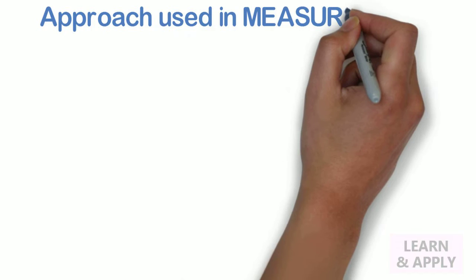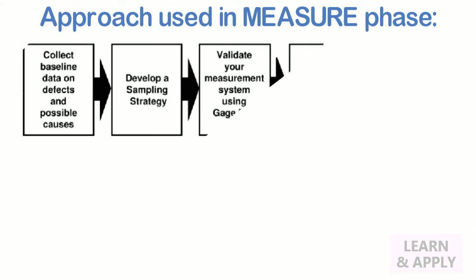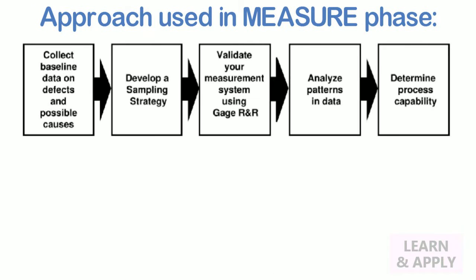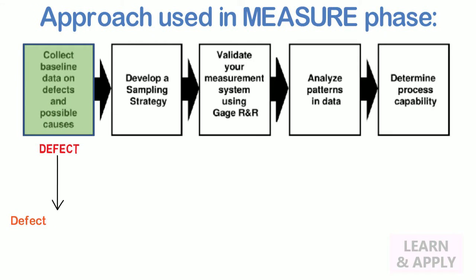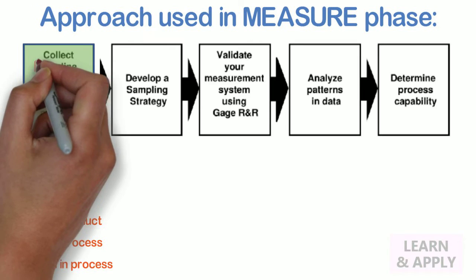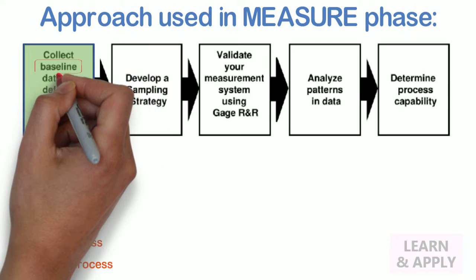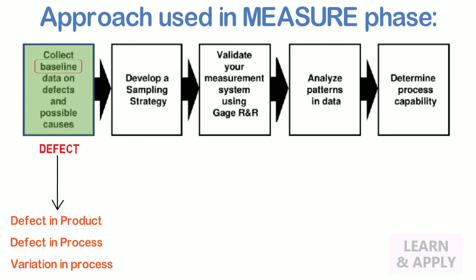Approach used in the measure phase: In the measure phase, we first collect baseline data on defects and list down its possible causes. Here, a defect can be an actual defect in the product, the process, or undesirable variation in the process. The term baseline is used for the current situation of the product or process performance.